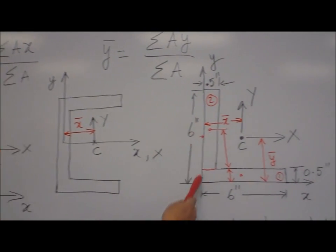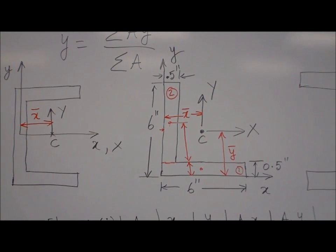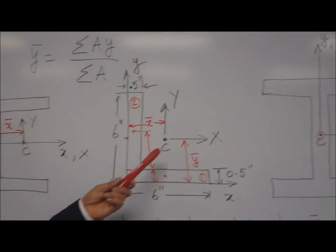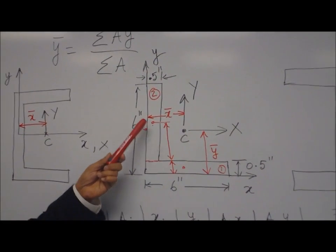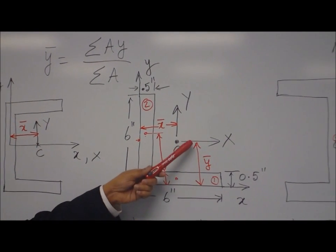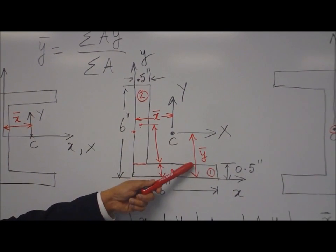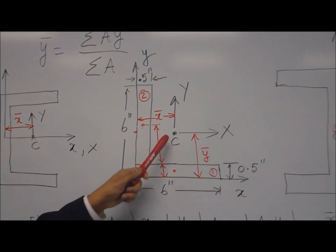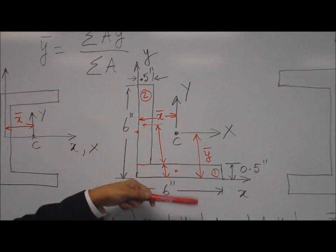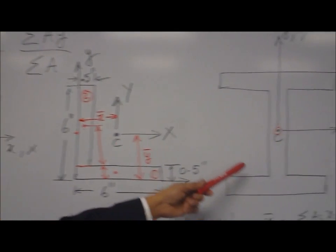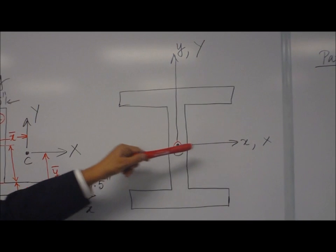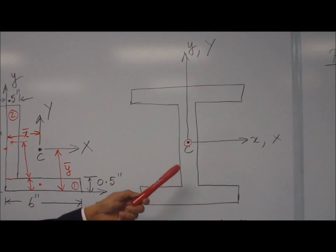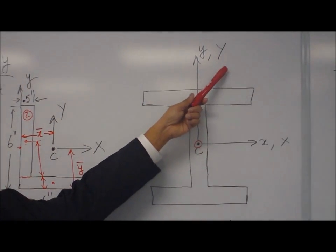If you take an L-section, it has no symmetry — neither horizontal nor vertical. So the centroidal location lies at some point outside the simple shape that needs to be calculated, given by the distance x̄ from the x-axis and ȳ in the vertical direction. Both x̄ and ȳ together give the centroidal location, so capital X and capital Y do not coincide with the reference axes. For the I-section, you have both vertical and horizontal symmetry, so the intersection of both symmetry axes — the midpoint — is the centroid, and the reference axis and centroidal axis coincide.